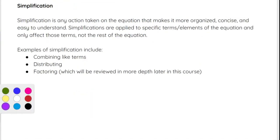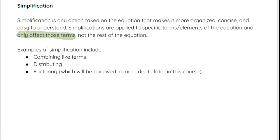Simplification is any action taken on the equation to make it more organized, concise, and easy to understand. Simplifications are applied to specific terms or elements of the equation and only affect those terms, not the rest of the equation. Examples of simplification include combining like terms, distributing, or factoring — which we'll talk about more in a future lesson. Right now we're going to go into combining like terms and distributing.